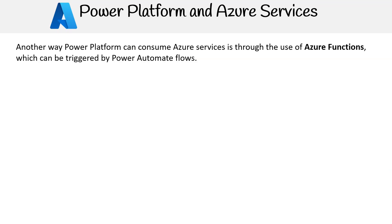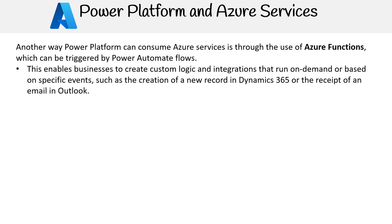Another way Power Platform can consume Azure services is through the use of Azure Functions, which can be triggered by Power Automate flows. This enables businesses to create custom logic and integrations that run on demand or based on specific events, such as the creation of a new record in Dynamics 365 or the receipt of an email in Outlook.